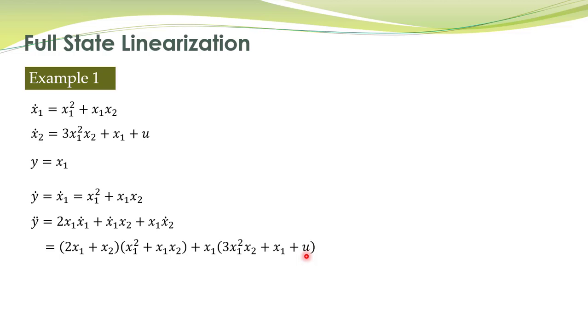But this relative degree is not in the entire state space because x1 is being multiplied with u. So that relative degree is equal to 2 in the domain defined by this set, that is x belongs to two-dimensional state space where x1 is not equal to 0. So in this domain, relative degree is equal to 2.